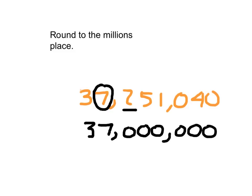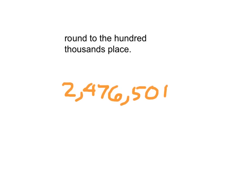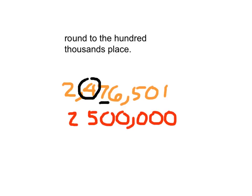37,251,040 rounded to the nearest millions place. Here it says to round to the 100,000th place, so I find that place and circle it — I circle the 4. I move to the right and underline the 7. Since 7 is between 5 and 9, add 1 is the game, so the 4 becomes a 5. Flex our muscles like a hero, digits to the right change to 0, and all other digits stay the same. I carefully place those commas as well. 2,500,000 is our rounded solution for this problem.